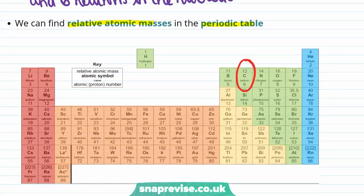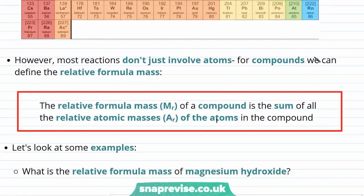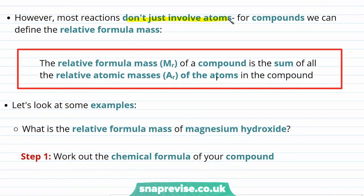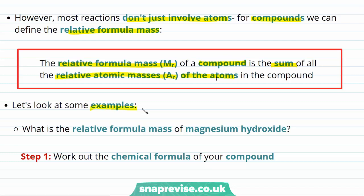This is really useful for comparing atoms, but most reactions don't just involve atoms. For compounds, we can define what is known as the relative formula mass. The relative formula mass, or Mr, of a compound is the sum of all the relative atomic masses, Ar, of the atoms in that compound. The best way to think about this is to look at some examples.